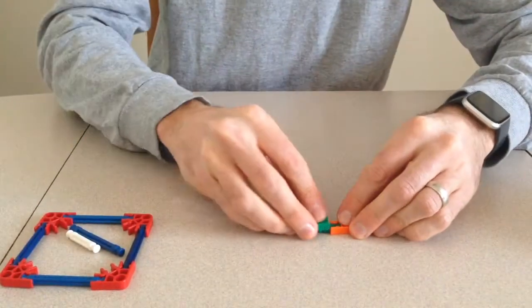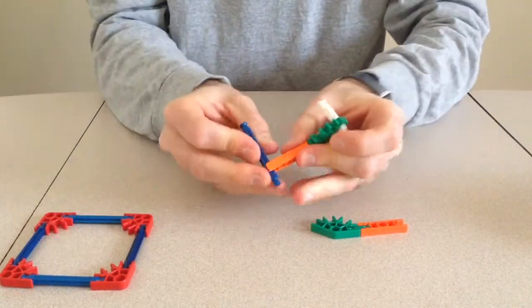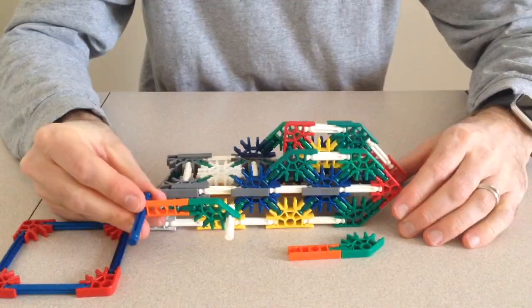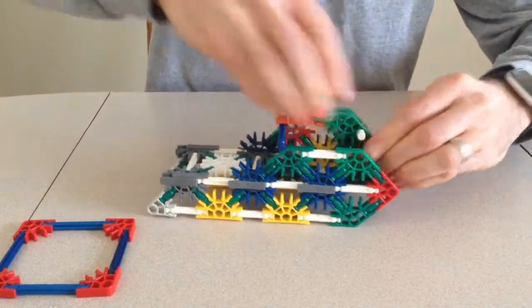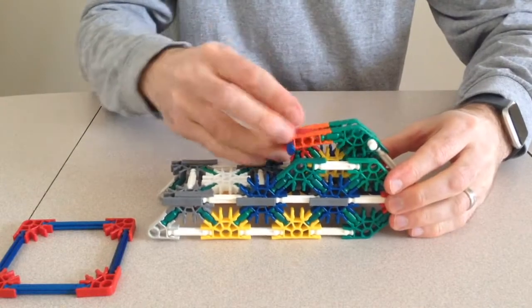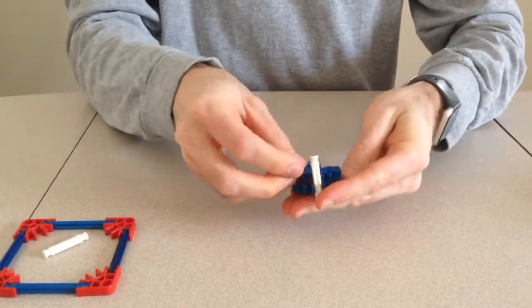Now, it is time to build the handle and attach it to the front of the jet ski. Finally, I will attach the propeller to the back.